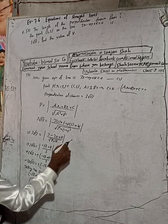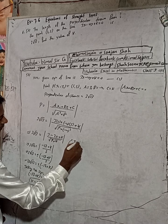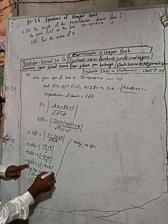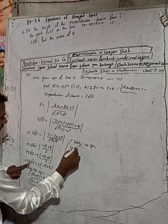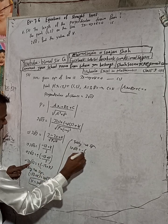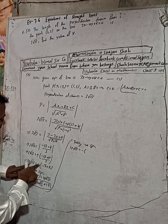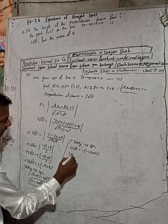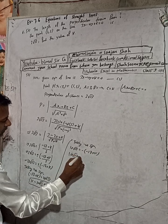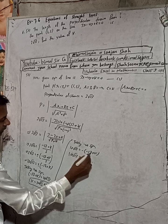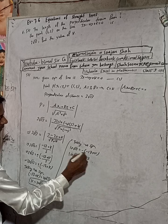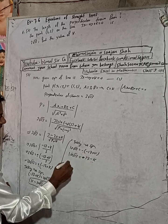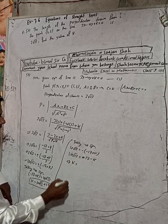Now taking the negative sign: 10√13 equals minus (minus 17 plus k). Expanding: 10√13 equals plus 17 minus k. Rearranging: k equals plus 17 minus 10√13.